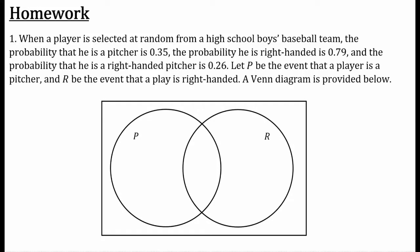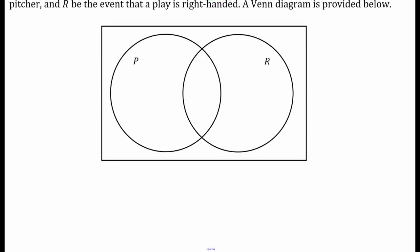Number one: When a player is selected at random from a high school boys baseball team, the probability that he is a pitcher is 0.35, the probability that he is right-handed is 0.79, and the probability that he is a right-handed pitcher is 0.26. Let P be the event the player is a pitcher, and R be the event that the player is right-handed. A Venn diagram is provided below, so we should probably fill in this Venn diagram here.